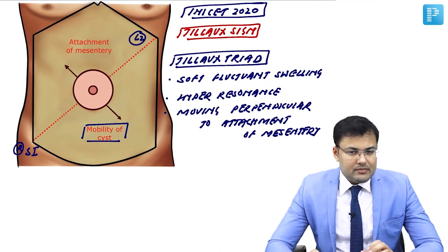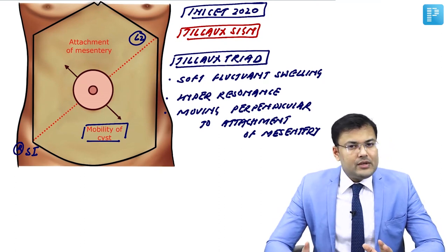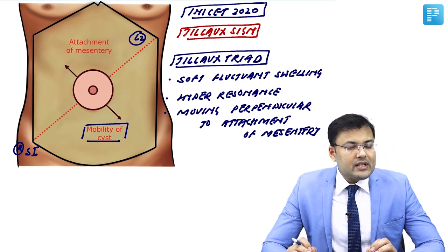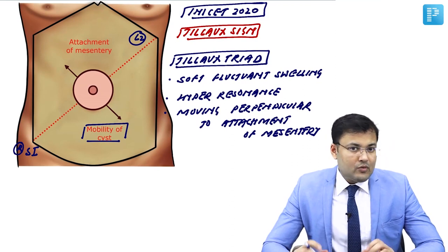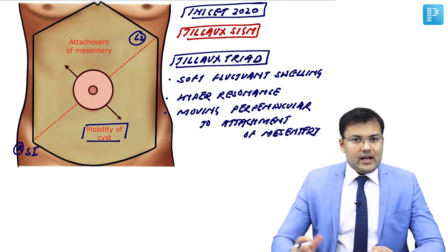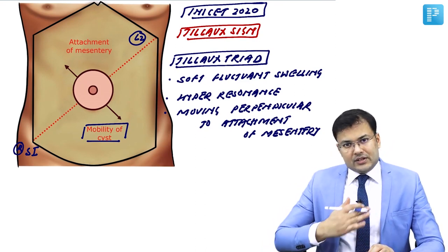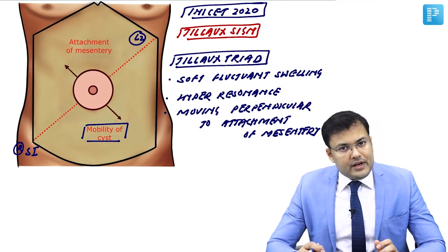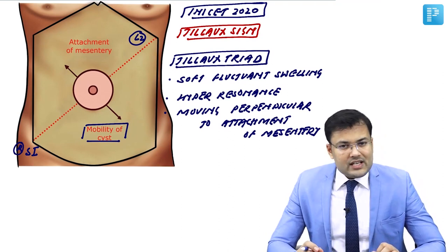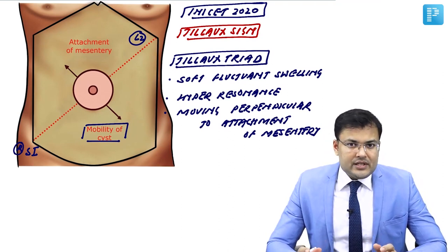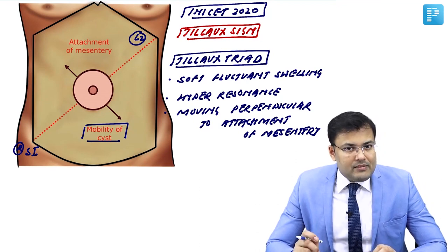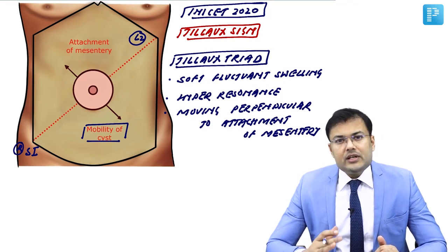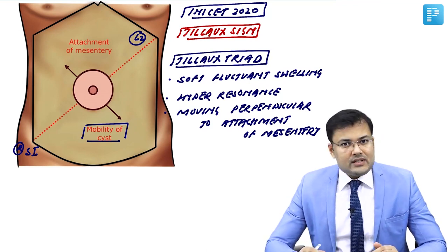Now talking about signs and symptoms. In majority of cases the patient is asymptomatic. The age of the patient is 20 years, more common in females, and these patients have abdominal distension occurring over a long period of time — it's slow. The patient is having abdominal distension but is asymptomatic. These are young females, around 20 years old, who may not notice the abdominal distension themselves.